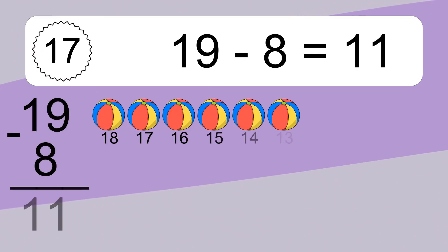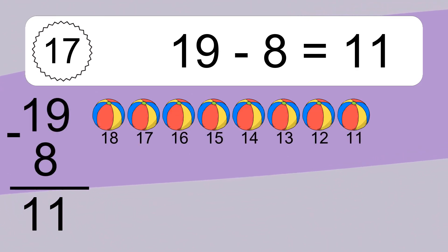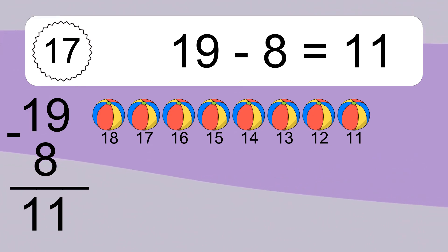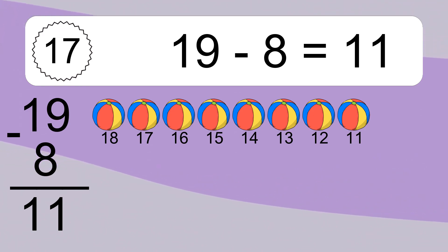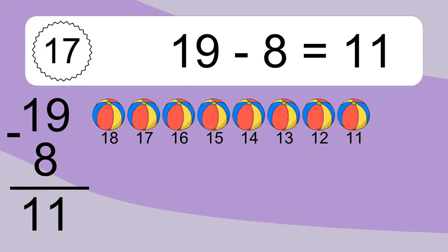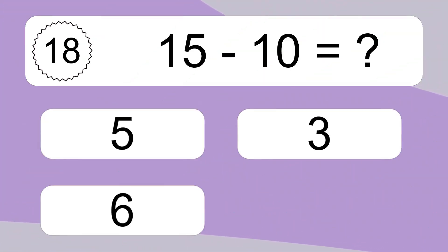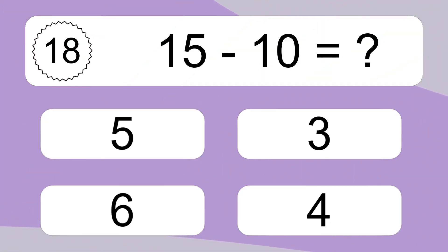19 minus 8 equals what? 19 minus 8 equals 11. Let's count it: 18, 17, 16, 15, 14, 13, 12, 11.